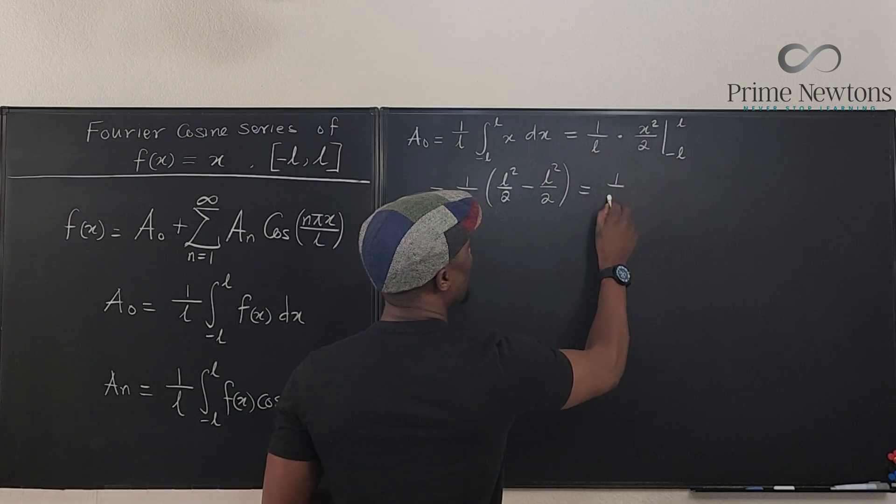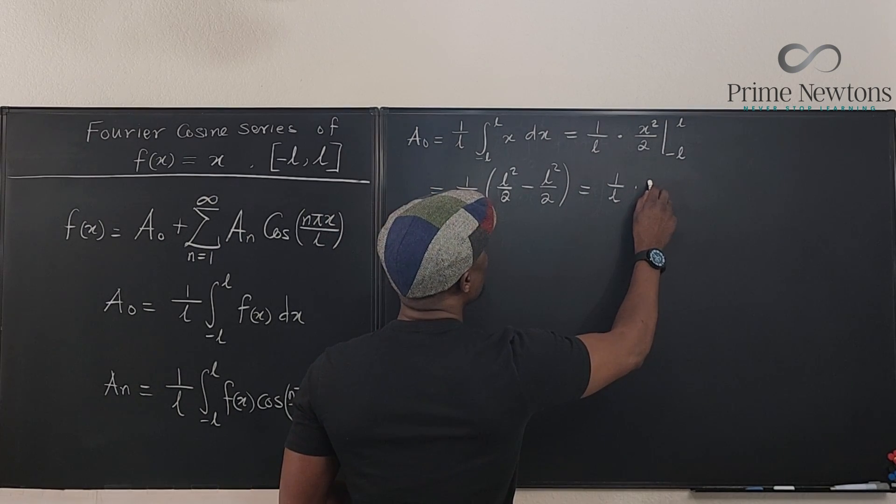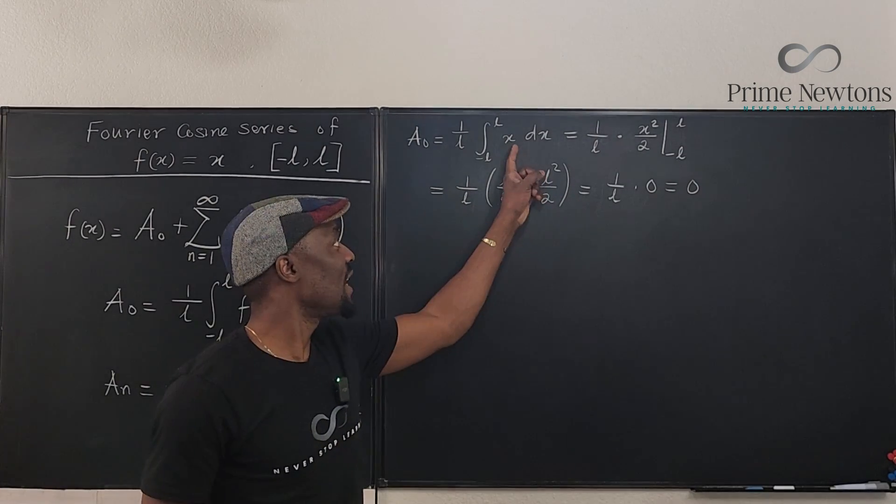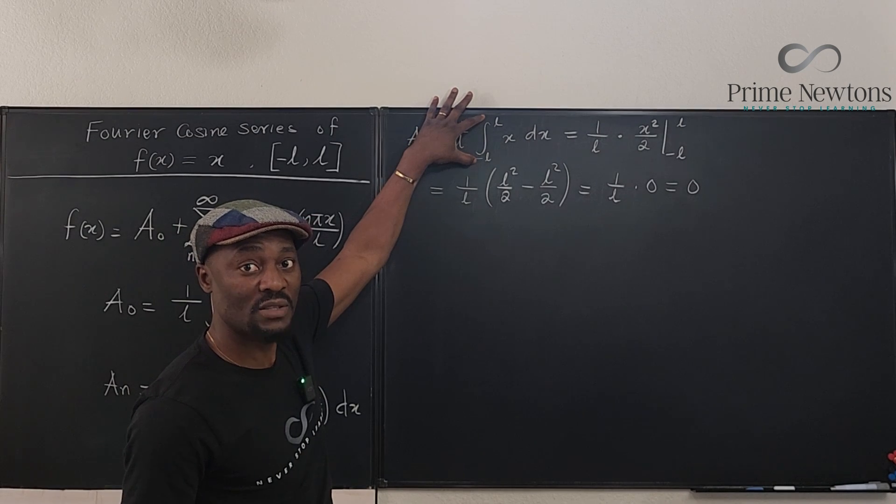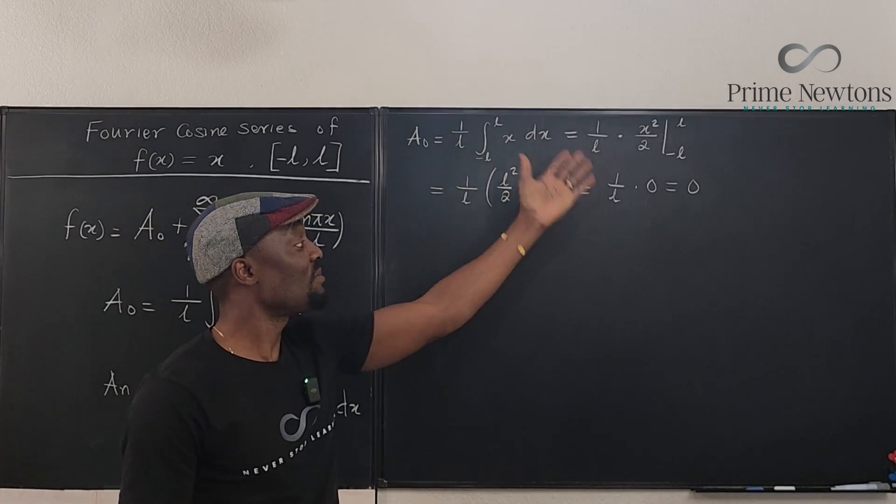What do I get? That gives me 1/L times zero. So that's going to be zero. Now you can see that this is an odd function. And whenever you have symmetric conditions for an odd function, what do you get? You get a zero. So this is going to be a zero.